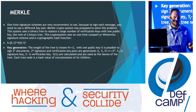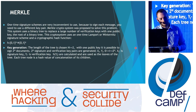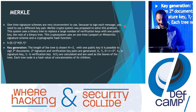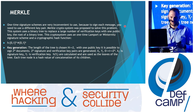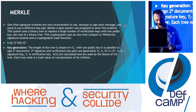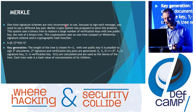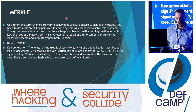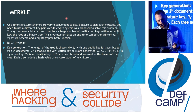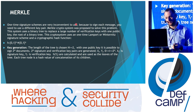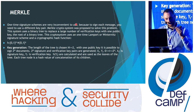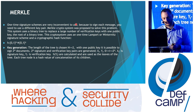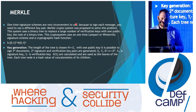A variant called Winternitz one-time signature scheme was offered to reduce the size of signatures. But these one-time signatures are not convenient in practice because there are too many signature and verification keys. There was then proposed the Merkle crypto system, where the public key replaces all these verification keys — the public key is the root of the tree.